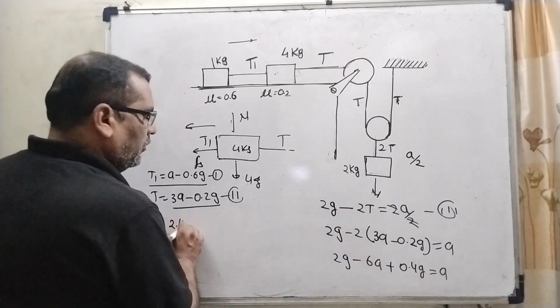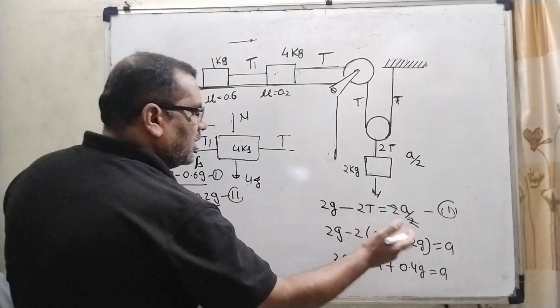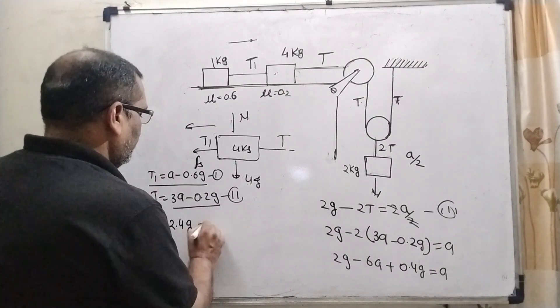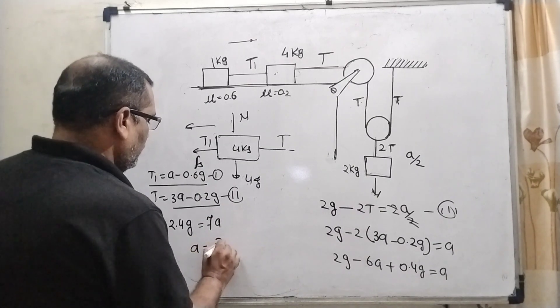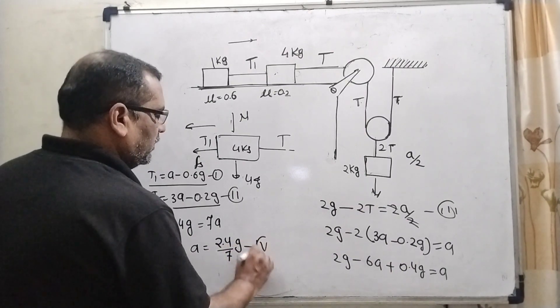Then these values become 2 G and 0.4 G. Then 2.4 G and minus 6 A transposing to the right side, 6 A plus A become 7 A. So here A is 2.4 by 7 G. It is 4th edition.